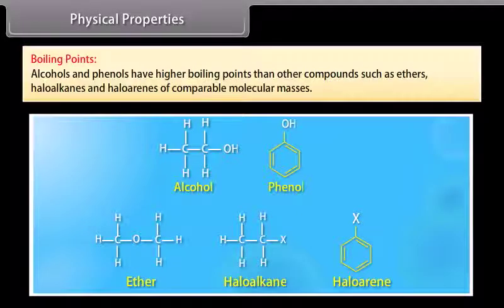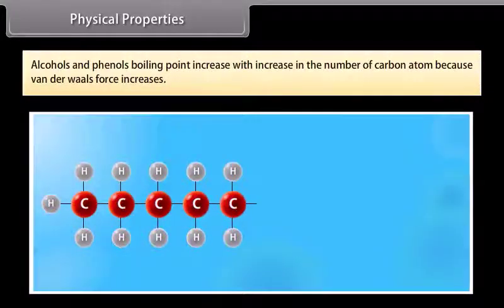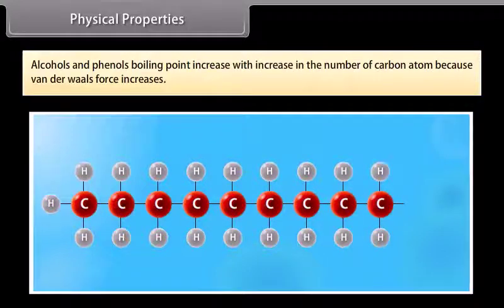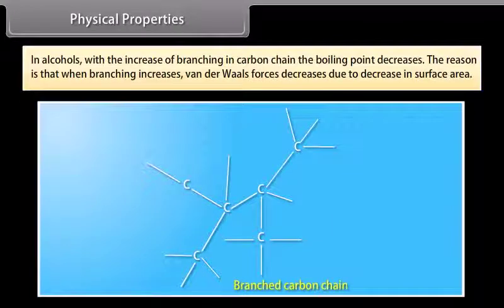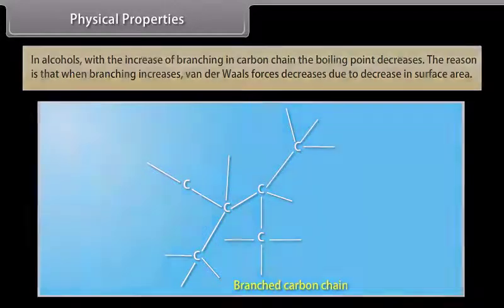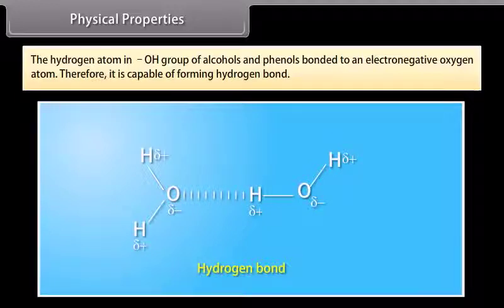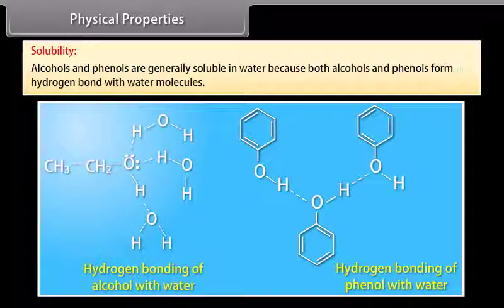Physical properties — boiling points: alcohols and phenols have higher boiling points than other compounds such as ethers, haloalkanes and haloarenes of comparable molecular masses. Boiling point increases with increase in the number of carbon atoms because van der Waals forces increase. With increase in branching in the carbon chain, boiling point decreases because branching reduces surface area and thus van der Waals forces. The hydrogen atom in the O-H group is bonded to an electronegative oxygen, enabling hydrogen bonding. Solubility: alcohols and phenols are generally soluble in water because they form hydrogen bonds with water molecules.